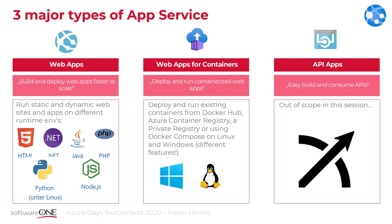Today we're going to talk about App Service and then a little bit about containers. If you go to the Azure portal and click 'Create Resource' and search for 'App Service', you won't find a service called that - because App Service is more of a term for several services underneath it. Number one is Web Apps. If you type 'Web Apps' you'll find it as an Azure service. A web app is basically a platform to run whatever web application you have, as long as it fits the languages and frameworks provided.